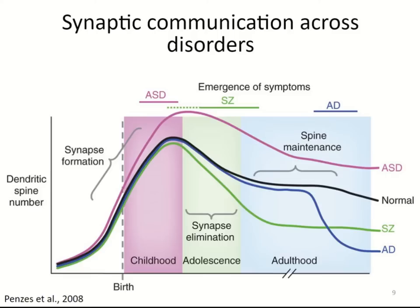In normal individuals, dendritic spine number increases in childhood, then adolescence brings pruning — a reduction of spines — which continues as we age. In Alzheimer's disease, there is a dramatic reduction at older ages. In schizophrenia, there is a reduction and pruning in adolescence. In autism spectrum disorder, there is an increase in dendritic spine number during childhood that is maintained at high levels across life. All of these dendritic alterations are associated with the specific symptoms of each disorder.